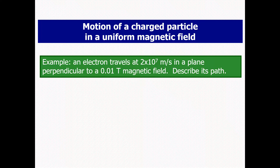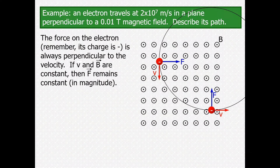An electron travels at a speed of 2×10⁷ meters per second in a plane perpendicular to a 0.01 tesla magnetic field. We need to describe its path. The electron moves in a uniform magnetic field and the magnetic field is perpendicular to the velocity of the electron.